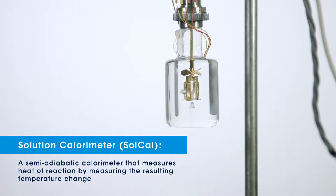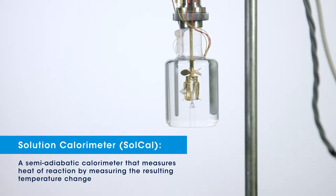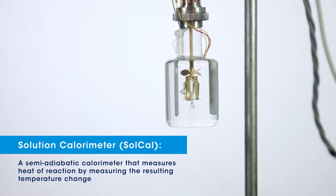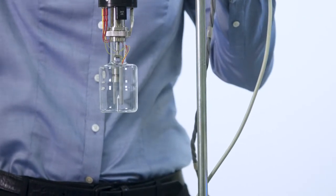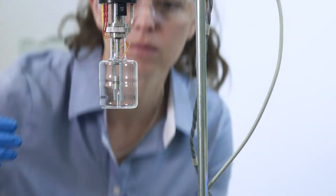The SolCal is a semi-adiabatic calorimeter that measures heat of reaction by measuring the resulting temperature change. The temperature of the solution calorimeter and the reaction mixture is measured by a thermistor.